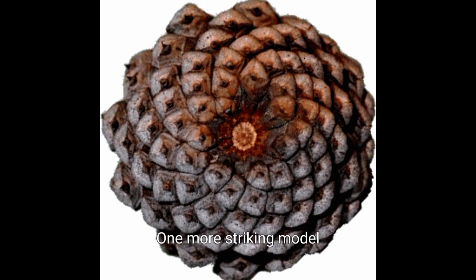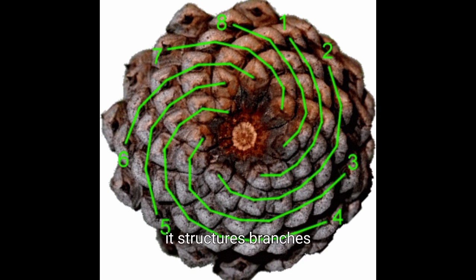One more striking model can be seen in the fanning of trees. As a tree develops, it structures branches that follow the Fibonacci succession.